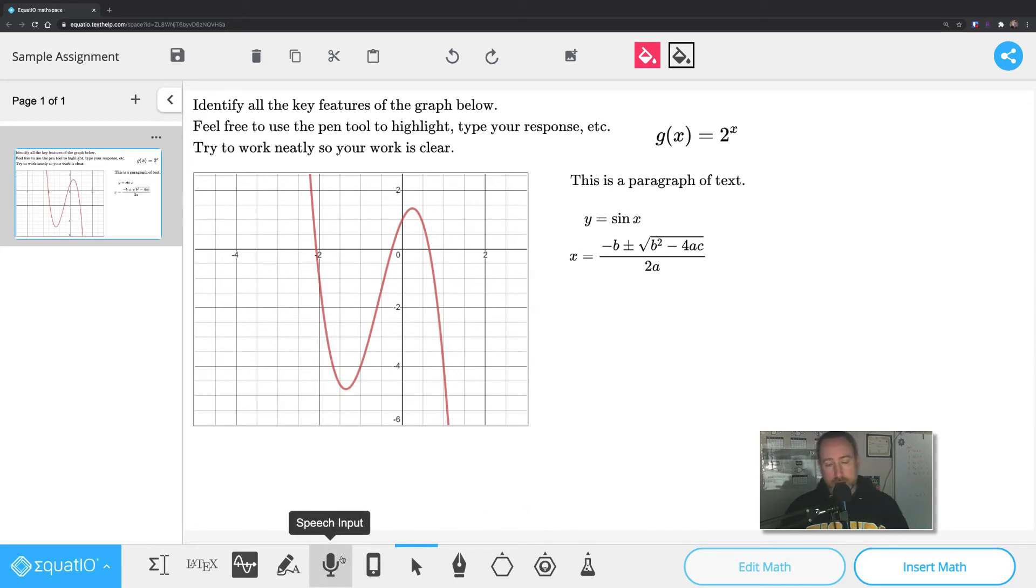Next up is the speech input. You can actually talk to it. There's an EquatIO mobile. So for those of you with a tablet or something like that, or even your phone, very handy, actually really easy to use. So check that out. The Select tool is exactly what you would think.